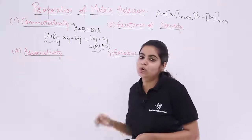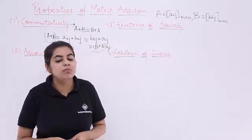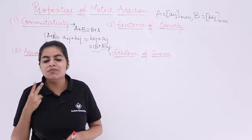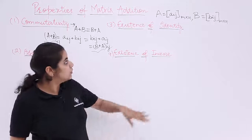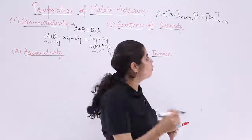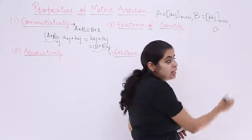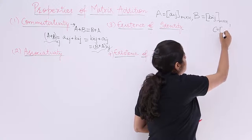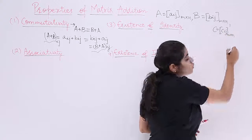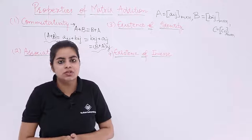The second property is associativity. For associativity we don't need just two elements — we need one extra element. So in addition to matrices A and B, we introduce a new matrix C, which is Cij with the same order M by N.